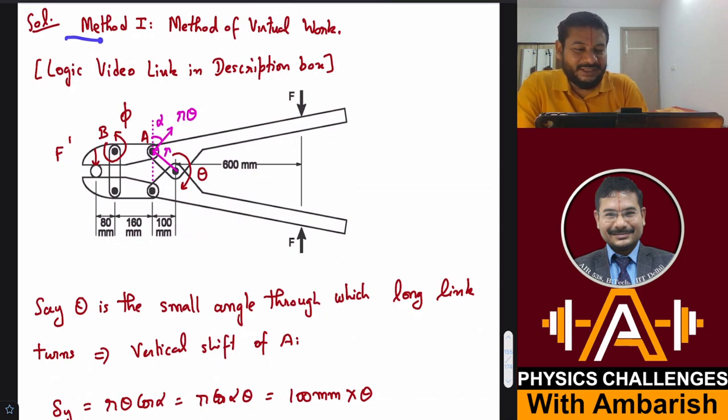First method is method of virtual work. The video link I will give in the description box. Let us say we imagine that this handle turns by some angle theta about this pivot. This turns through angle theta. Then what happens?